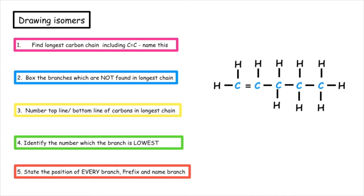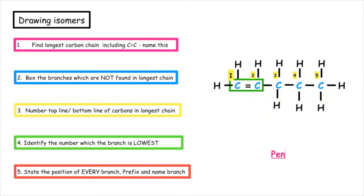Let's have a go at drawing isomers of alkenes. The first alkene that we have to name is a straight-chained alkene, so we have to find the longest carbon chain, including the carbon-to-carbon double bond. We number the top carbons and then we number the bottom carbons. We can see that there are no branches — all the carbons are found in one long chain. The lowest position that the carbon-to-carbon double bond can be found on is position one, so the name of this alkene is pent-1-ene.